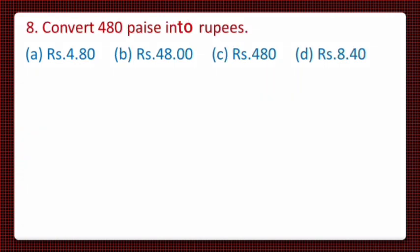Next, question number 8 is: convert 480 paise into rupees. Its 4 options are given. Option A is 4.80 rupees, Option B is 48 rupees, Option C is 480 rupees, and Option D is 8.40 rupees.